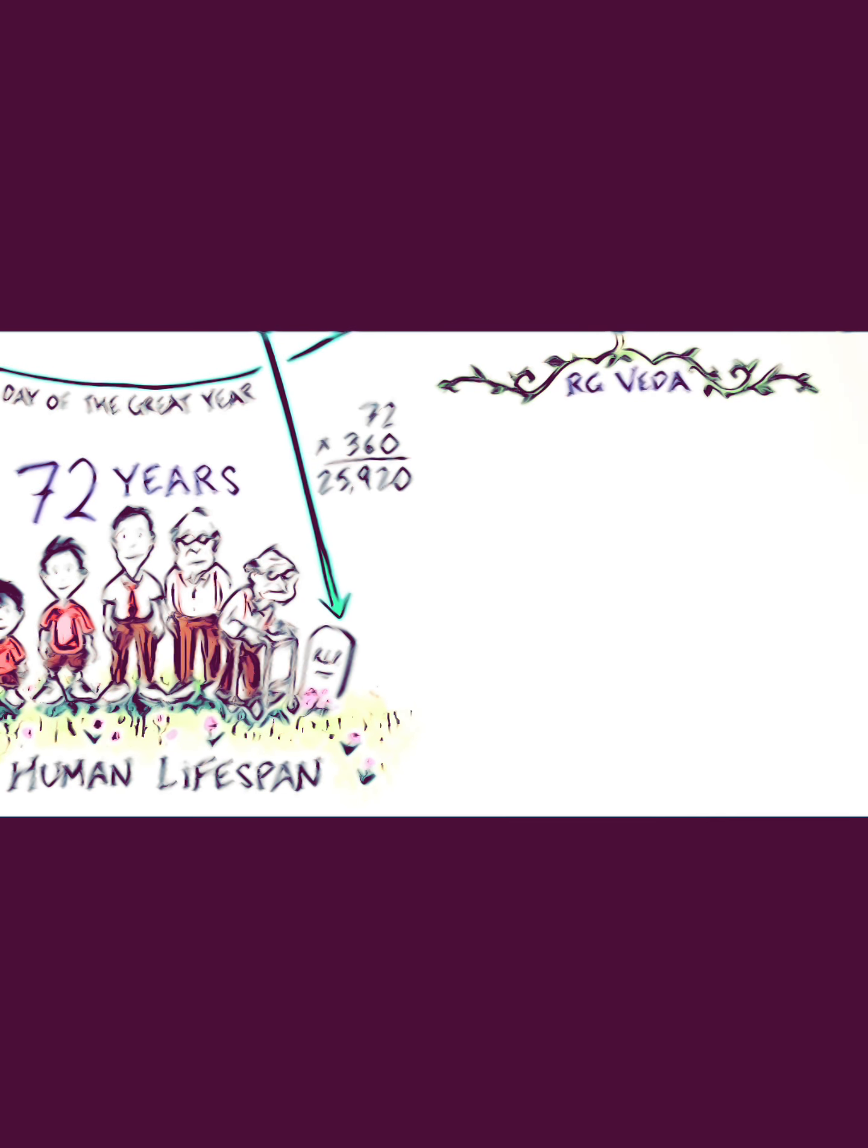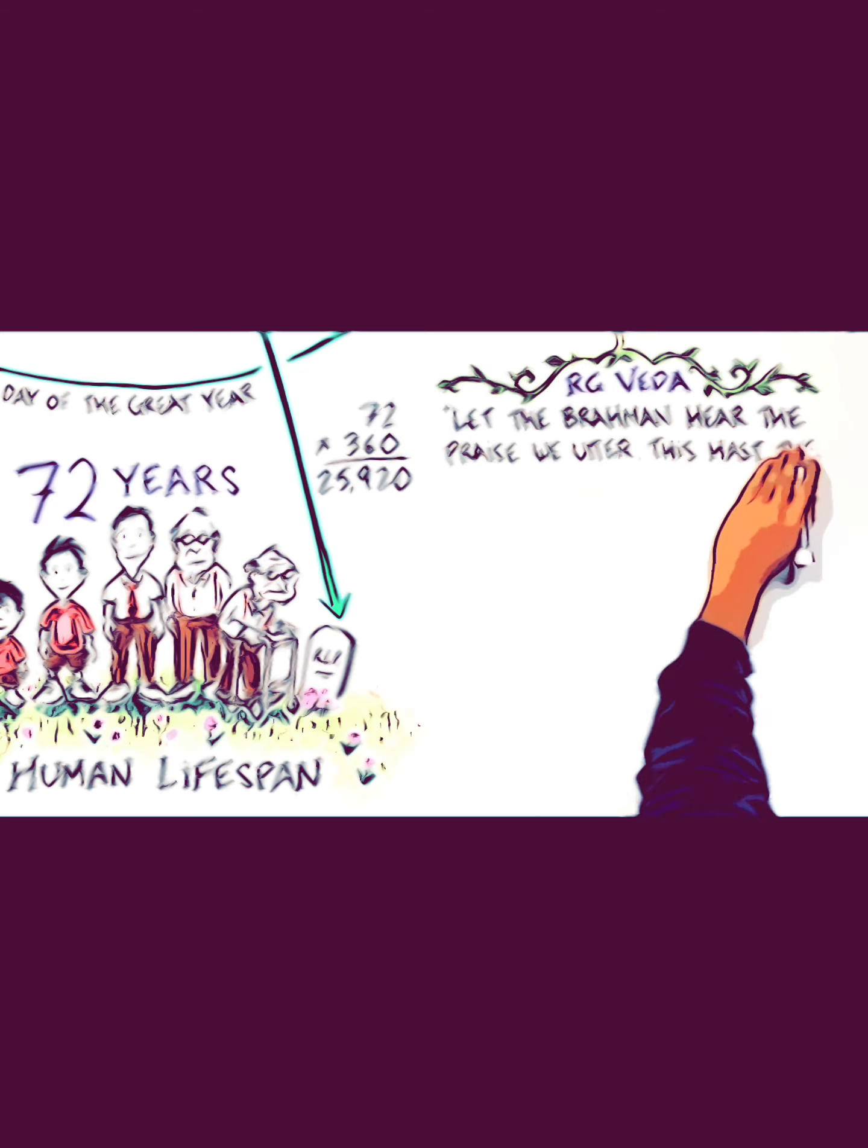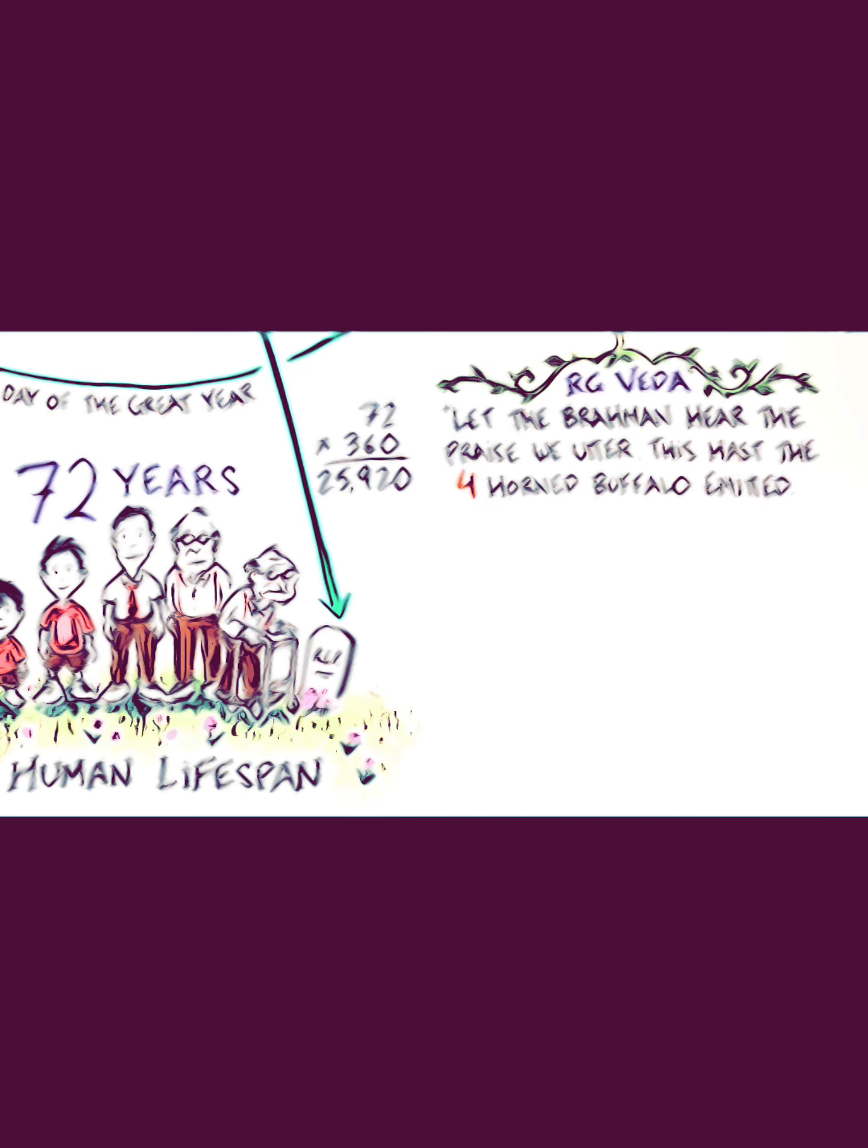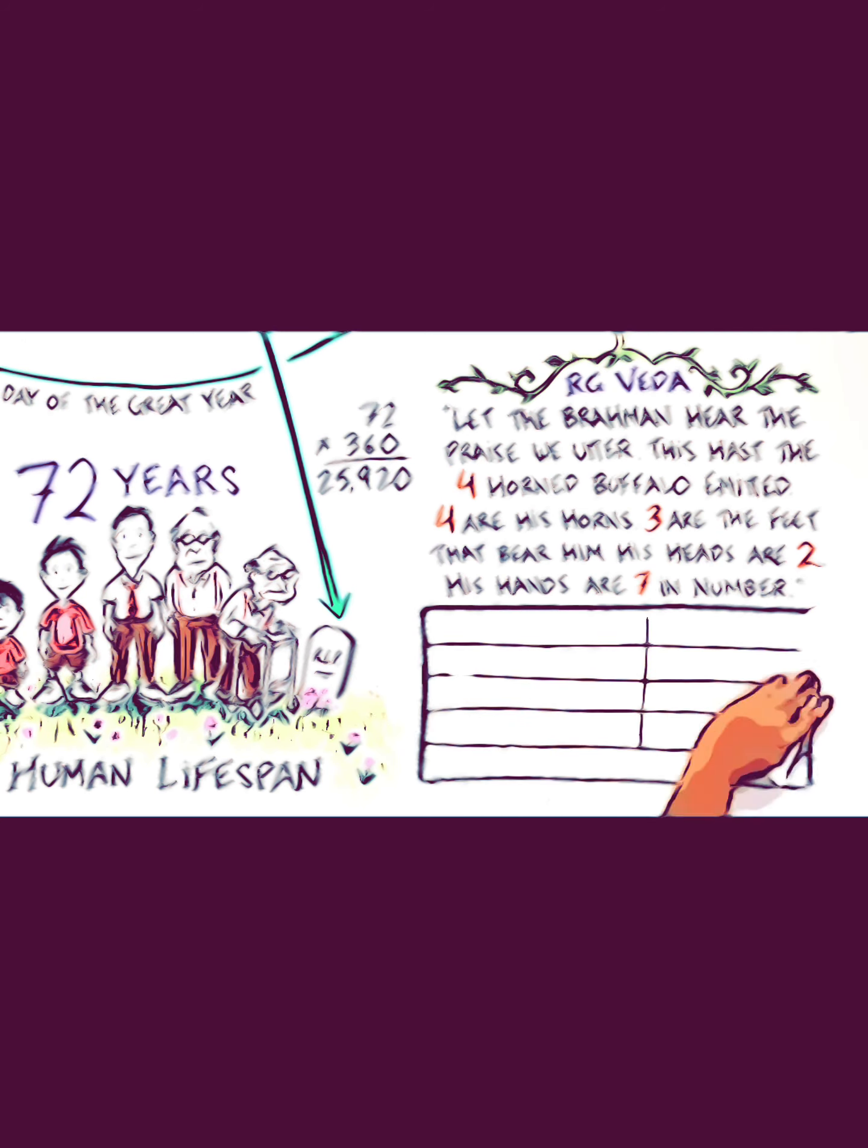In the Vedas, they encoded numbers in various ways. 'Let the brahmin hear the praise we utter. This has the four-horned buffalo emitted. Four are his horns, three are the feet that bear him, his heads are two, his hands are seven in number.' Notice: 432 raised to the seventh power gives the number of years in the ancient Vedic time span, the Kalpa: 4,320,000.